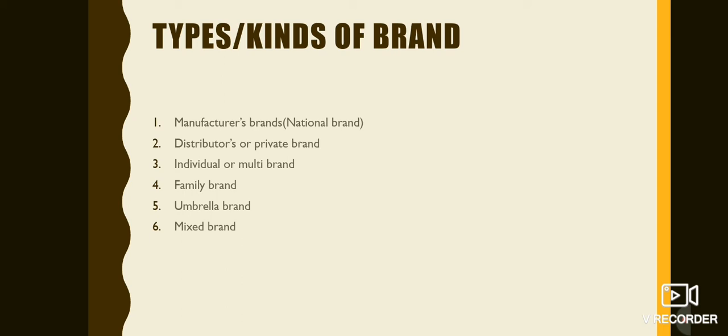Then, family brand — one brand name is given to all products in a product line. For example, Amul — they have milk, butter, cheese, and other products all under the Amul name. That is a family brand, also called a blanket brand.